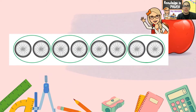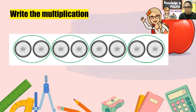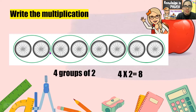Now we're going to write a multiplication sentence for this equal group. We have four groups of two. What is the multiplication sentence? Four times two — four groups is the first factor, two in each group is the second factor — equals eight, the product, the total amount.